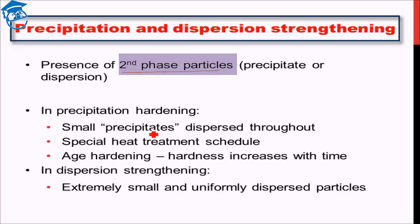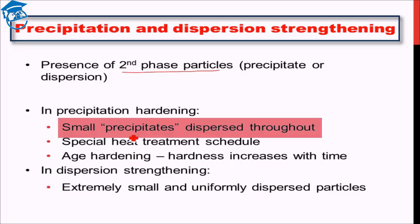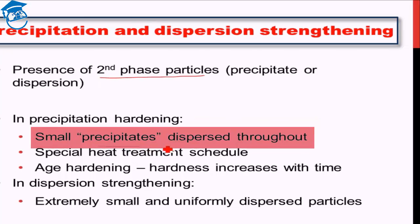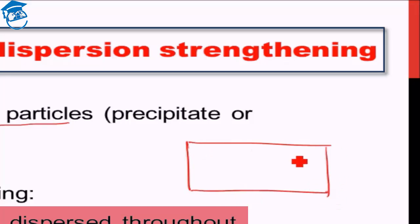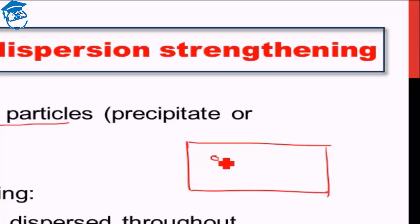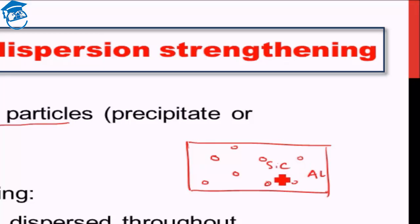In precipitation hardening, we have small precipitates — solid particles of the second phase which are dispersed throughout the bulk. For example, you can have silicon carbide precipitate particles dispersed in a bulk of aluminum. There are special heat treatment schedules in order to create these precipitate particles, which we will see in much more detail in a later lecture. For the time being, just assume that it is a second phase in a matrix.